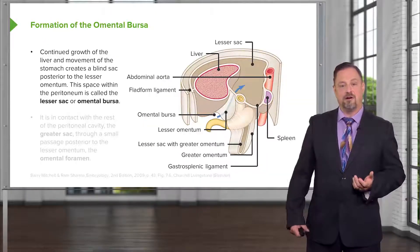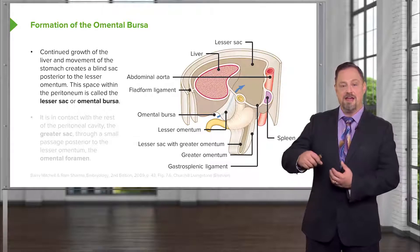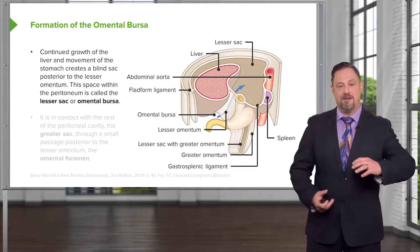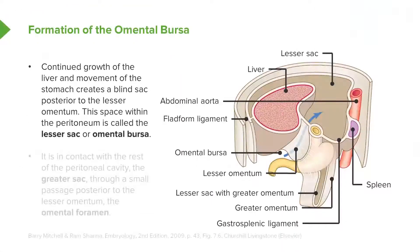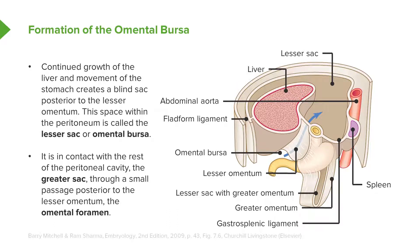The liver continues to enlarge, the stomach continues to rotate, and as the greater curvature balloons, the pyloric region and proximal duodenum are forced to the right. This process creates a space posterior to the liver and posterior to the stomach that is called the lesser sac or the omental bursa. It is part of the peritoneal cavity, but the peritoneal cavity as a whole is only connected to this lesser sac by a small gap running right underneath the lesser omentum. This is known as the omental foramen, or more commonly to surgeons, the foramen of Winslow.